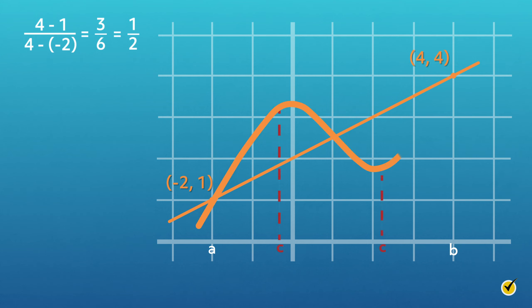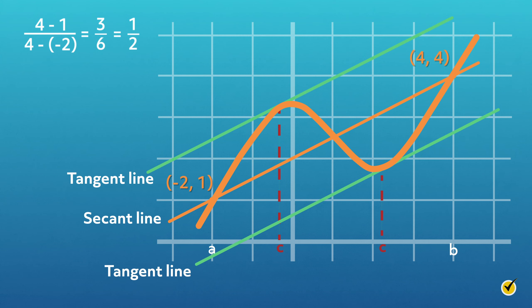What if a curved function goes through those points? On the interval negative 2 to 4, there must be at least one tangent line that is parallel to the secant line. Recall that a secant line is a straight line that intersects a curve in at least two different points. In this case there are two tangent lines that are parallel to the secant line. You can imagine how the theorem would hold for functions of many different shapes.